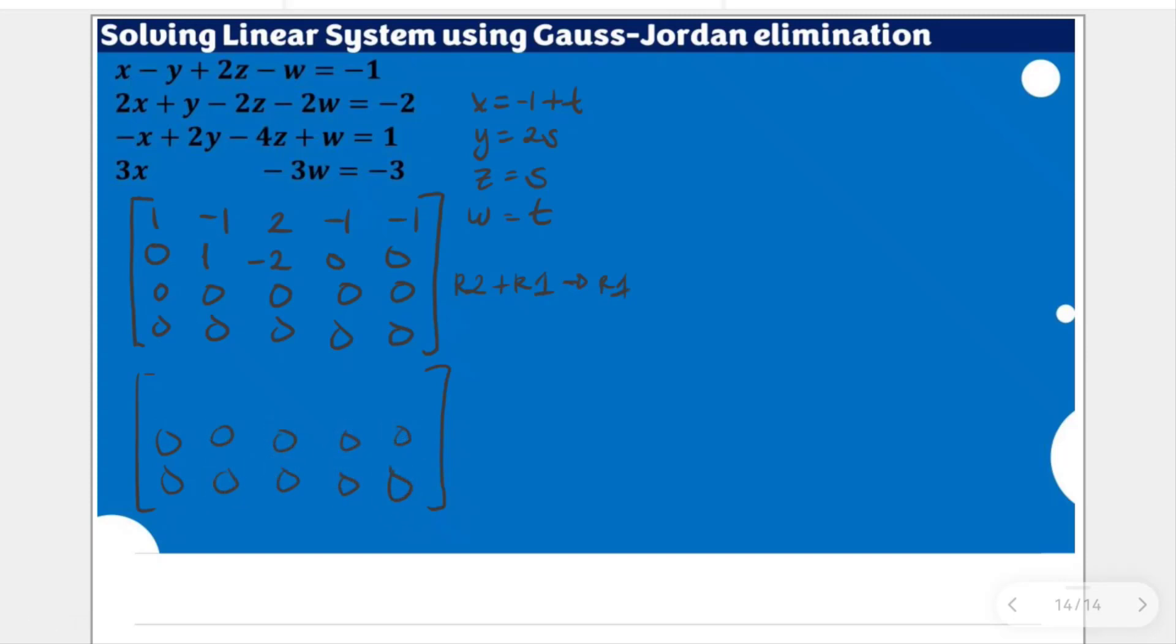So the last two rows are still zeros. We did not touch or we did not change the row number two. So zero, one, -2, zero, zero. Sorry, my bad. My handwriting is not good. Zero, one, -2, zero, zero.